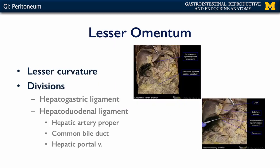The lesser omentum is derived from the ventral mesentery and is in association with the lesser curvature of the stomach. It helps to connect the lesser curvature of the stomach and related portions of the gut tube to the liver. There are two major constituents of the lesser omentum: the first is a membranous sheet known as the hepatogastric ligament, which runs between the liver and the lesser curvature of the stomach.